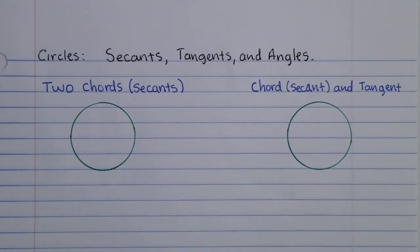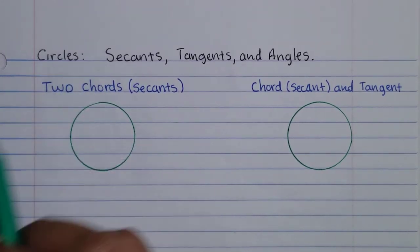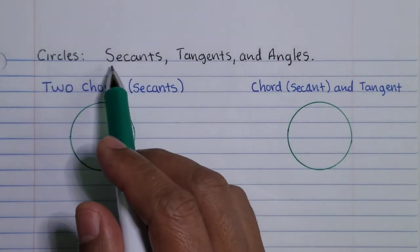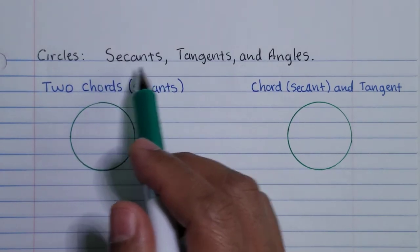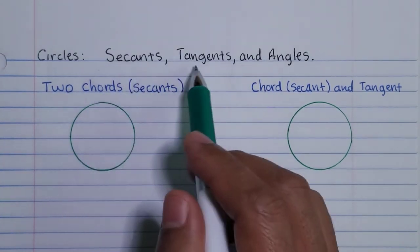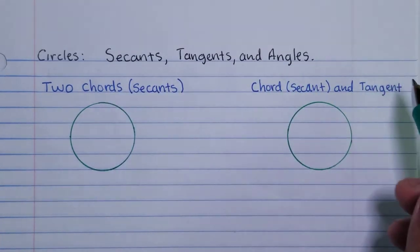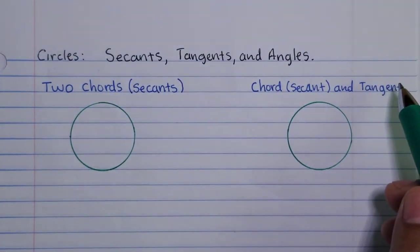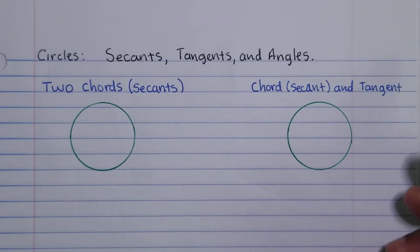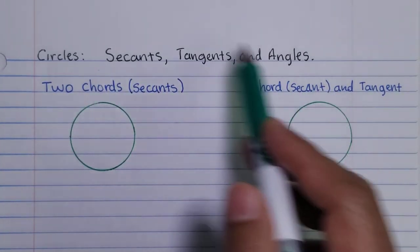Hello everyone, welcome back to another video lesson. In this lesson we are going to continue learning about circles, but now it will include secants and tangent lines, and the angles that are formed by these two intersecting. I'm going to ask you to pause the video, copy this down, and then press play to continue.